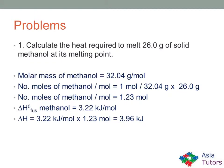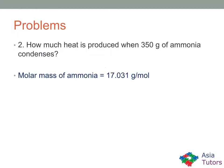Problem one: calculate the heat required to melt 26.0 grams of solid methanol at its melting point. First, find the number of moles of methanol. The molar mass is 32.04 grams per mole, so 26.0 grams gives us 1.23 moles. Looking at the table, delta H fusion of methanol is 3.22 kilojoules per mole, multiplied by 1.23 moles gives a final answer of 3.96 kilojoules.